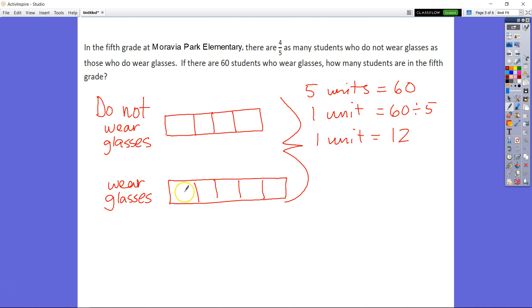So then if we had 9 units total, 9 units equals 9 times 12. And we know 9 times 12 is equal to 108. There are 108 students in the 5th grade.